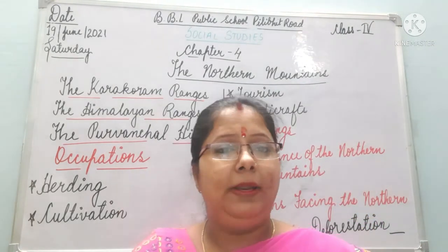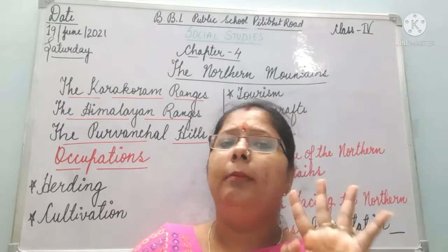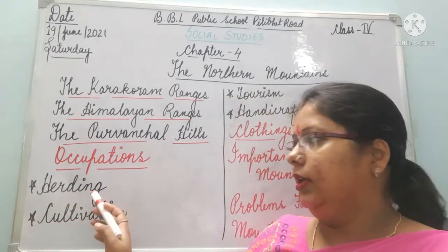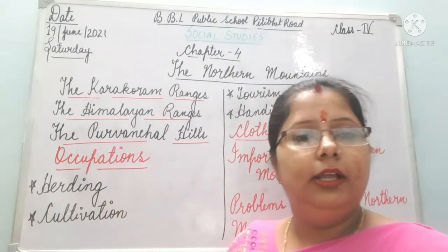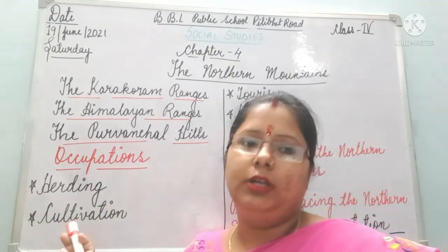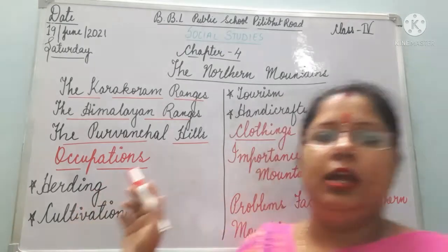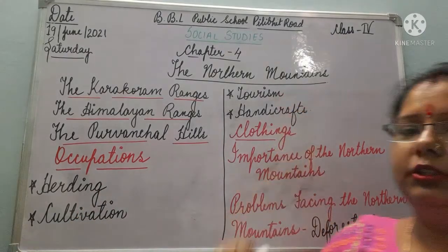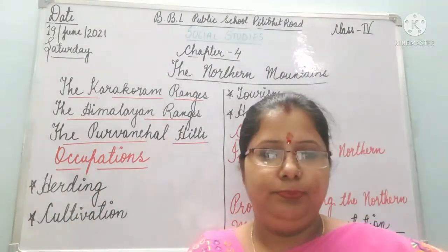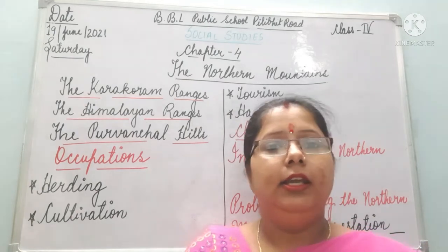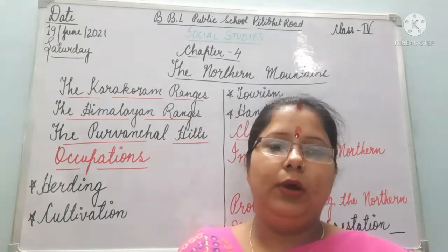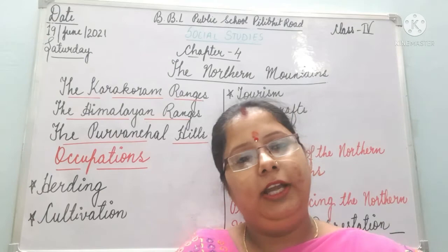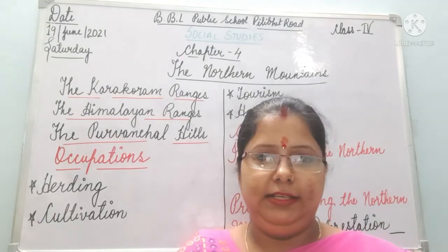The people in the northern mountains have four main occupations: number one is herding, number two is cultivation, number three is tourism, and number four is handicraft. Let's see each occupation one by one with the help of slides.